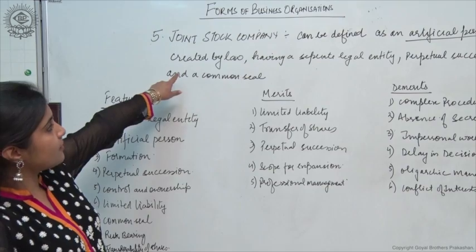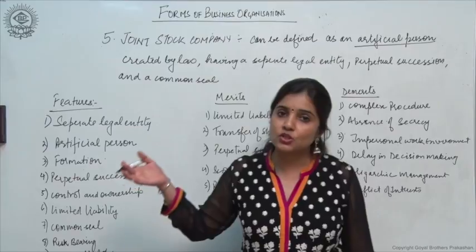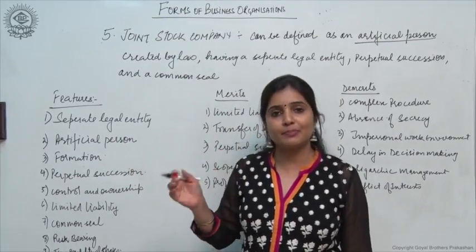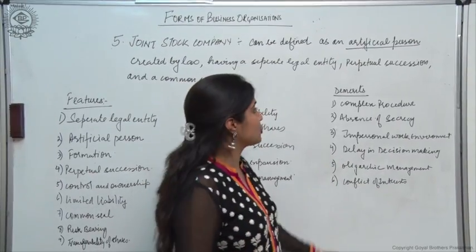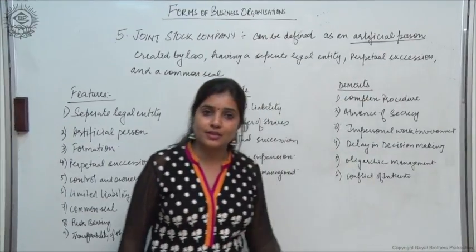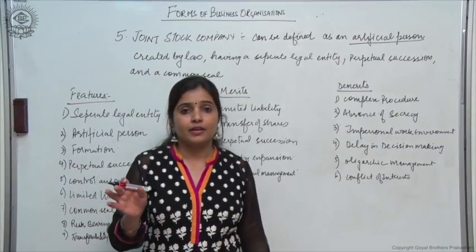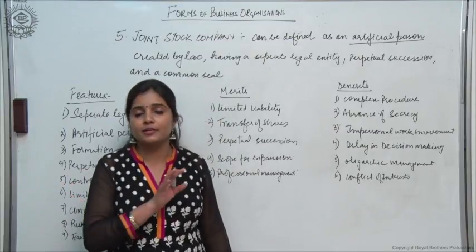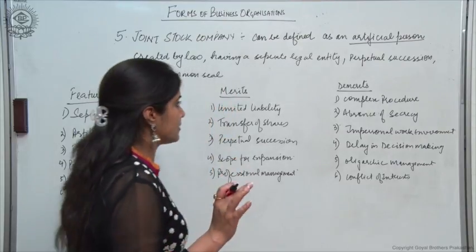Having a separate legal entity means the company is separate from its owners. There is a distinction between ownership and management. Then, perpetual succession — meaning it continues to exist year after year. The death, lunacy, etc. of the members or shareholders does not affect the existence of the company; it still continues to exist.